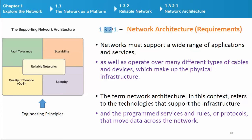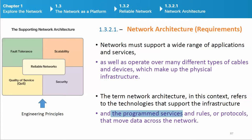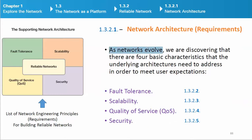Network architecture: Networks must support a wide range of applications and services, as well as operate over many different types of cables and devices which make up the physical infrastructure. The term network architecture refers to the technologies that support the infrastructure and the programs, services, and rules (or protocols) that move data across the network. As networks evolve, there are four basic characteristics that the underlying architectures need to address to meet user expectations: fault tolerance, scalability, quality of service (QoS), and security.